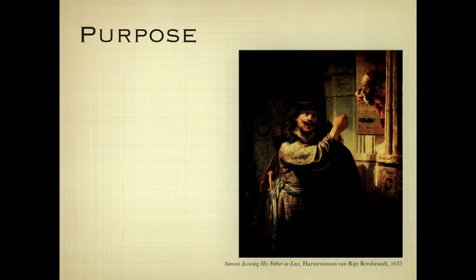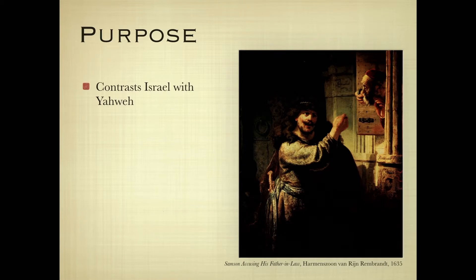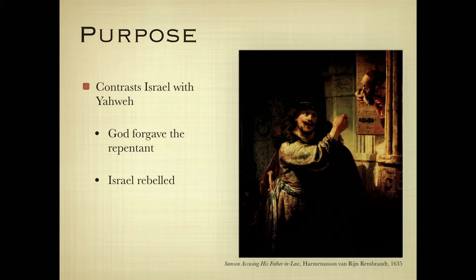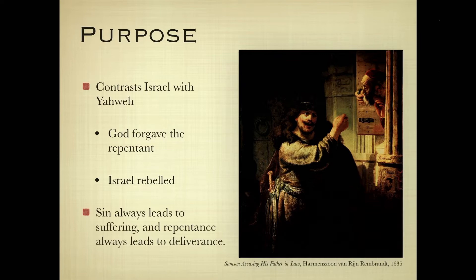Theologically, Judges makes a clear contrast between the idolatry, immorality, and violence of Israel and Yahweh's covenant faithfulness and gracious deliverance of his people. God's patient love is such that he forgave the repentant every time — every single time they repented. At the same time, Israel rebelled in foolishness, ingratitude, and stubbornness. Sin always leads to suffering and repentance always leads to deliverance. The circumstances change, civilizations change, yet the human condition and the human heart do not.